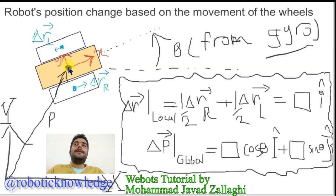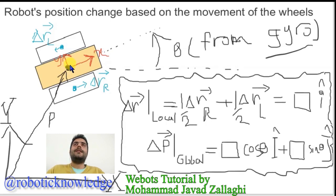We know that for an initial time the location of the robot is from assumption, and we want to update this position — the position of this black point — when the robot is moving.